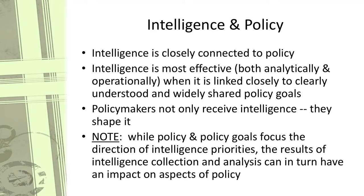In fact, intelligence is most effective, both analytically and operationally, when it is linked closely to clearly understood and widely shared policy goals. One of the main tasks of intelligence and the intelligence community is to inform policymakers. Policymakers are the recipients of intelligence, but they also, in certain ways, can shape it. Obviously policymakers do not actually generate intelligence. However, by setting policy-related intelligence requirements — giving direction to the intelligence community about the types of things that should be collected and analyzed — policymakers can affect what intelligence is actually targeted and what final or finished intelligence ultimately results.